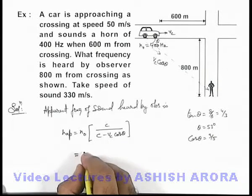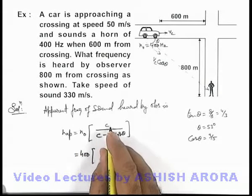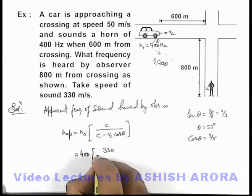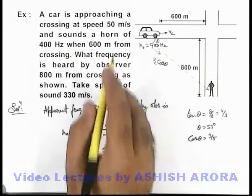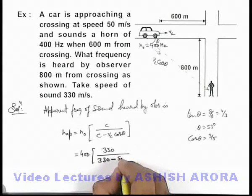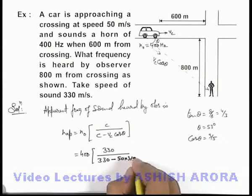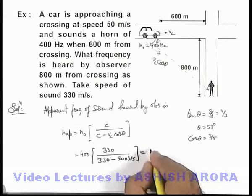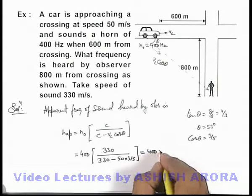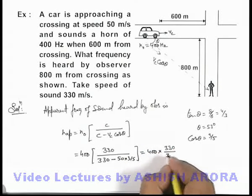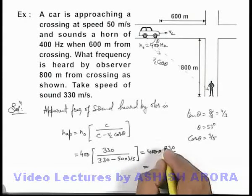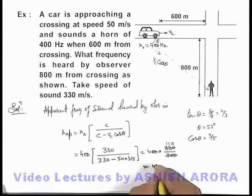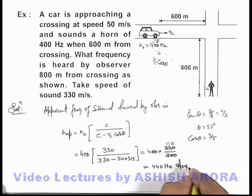Substituting the values: the actual frequency of the horn is 400, multiplied by the speed of sound 330 meters per second, divided by 330 minus v_c which is 50, multiplied by cos θ which is 3 by 5. Solving this gives 400 multiplied by 330 divided by 300. On simplifying, this gives us the value 440 hertz, which is the answer to this problem.